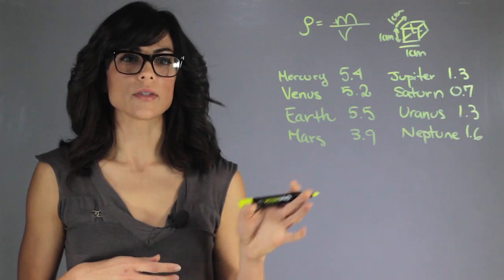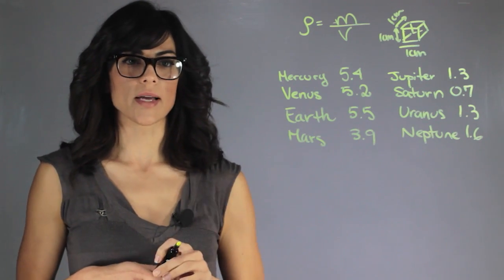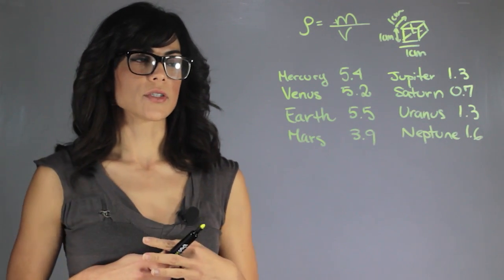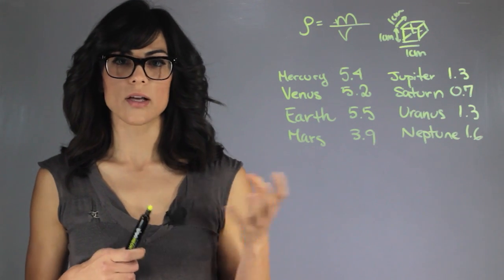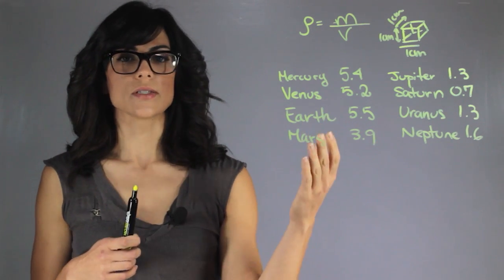And this is the average densities of the inner planets versus the outer planets. As you can see, the average density of the outer planets is a lot smaller than the average densities of the inner planets.